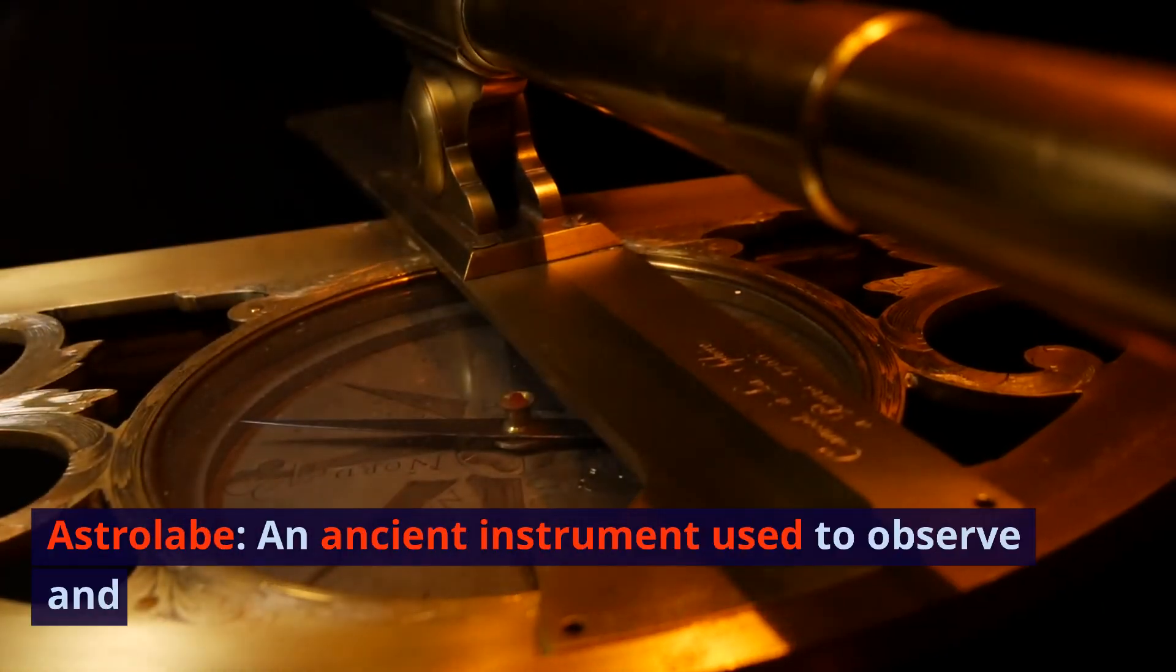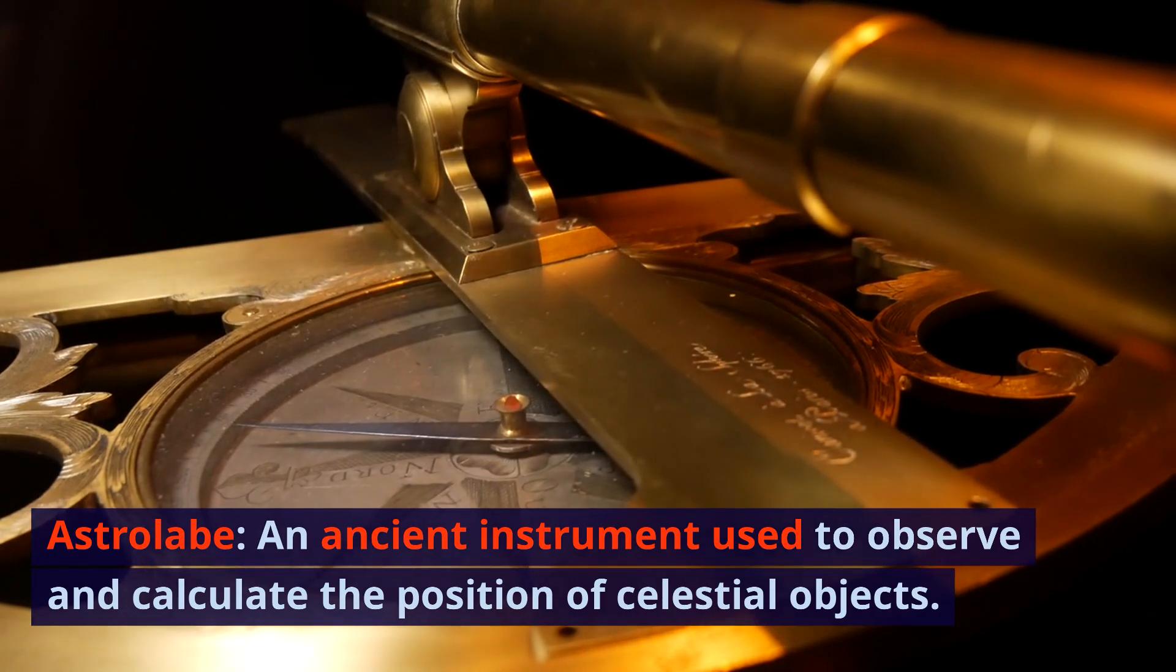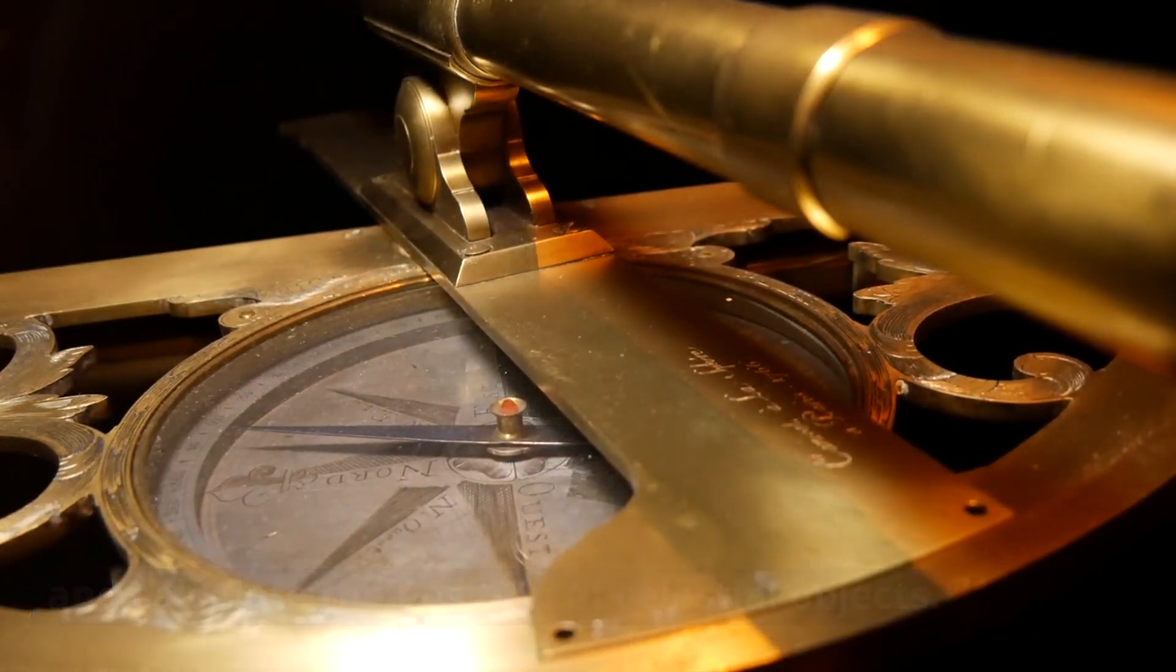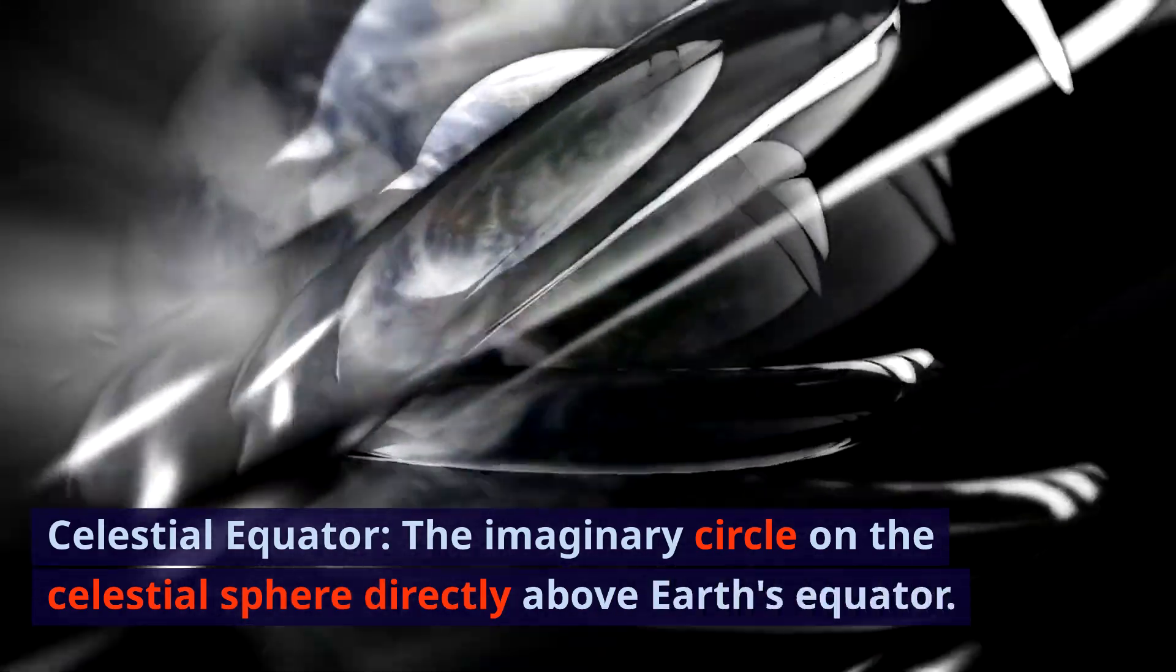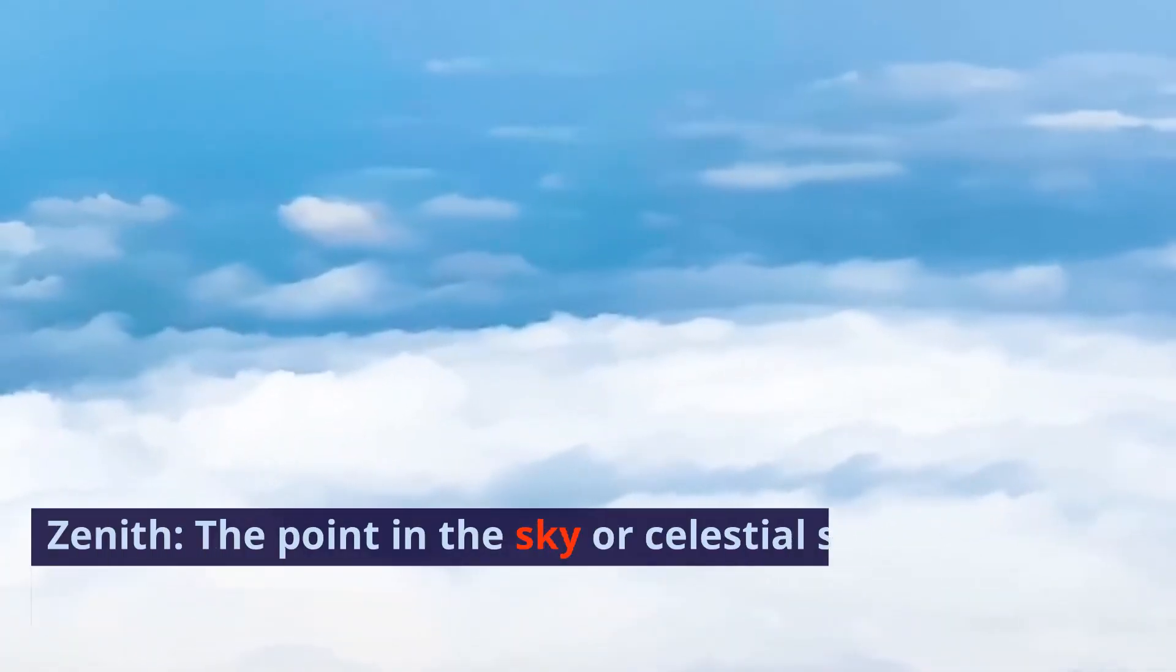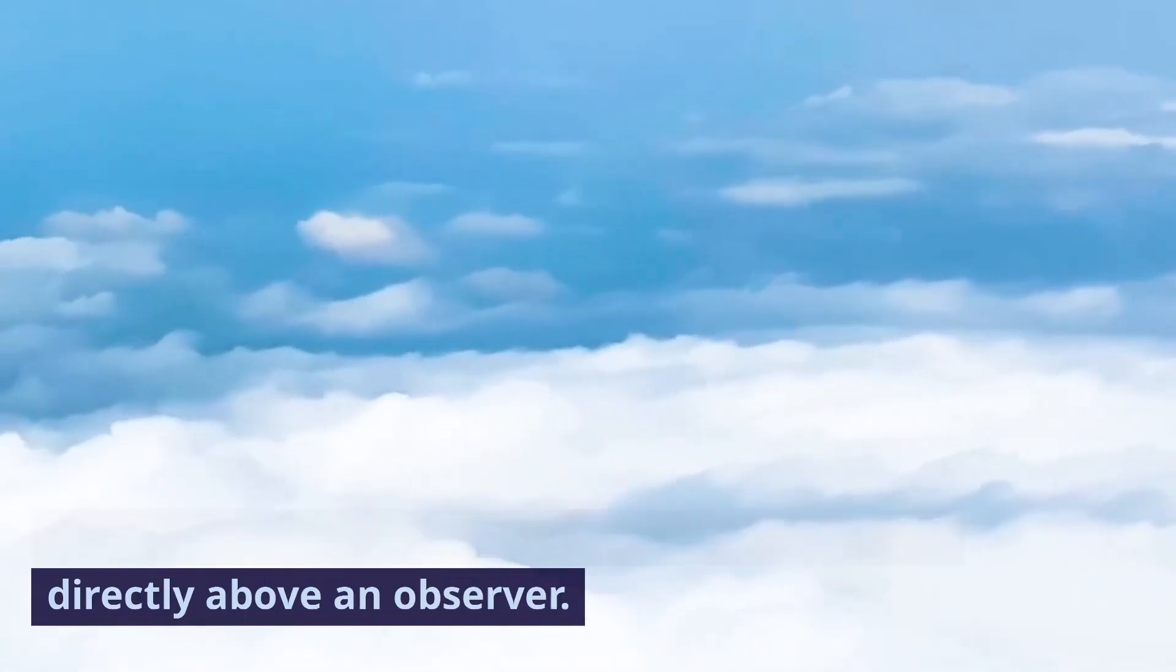Astrolabe. An ancient instrument used to observe and calculate the position of celestial objects. Celestial equator. The imaginary circle on the celestial sphere directly above Earth's equator. Zenith. The point in the sky or celestial sphere directly above an observer.